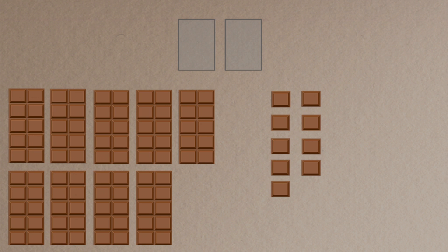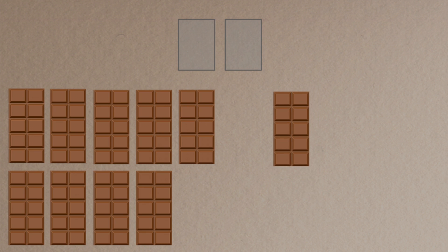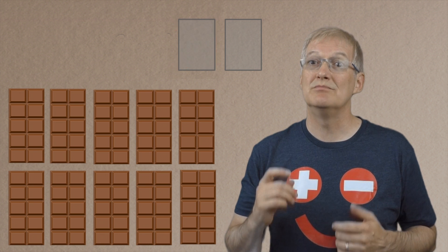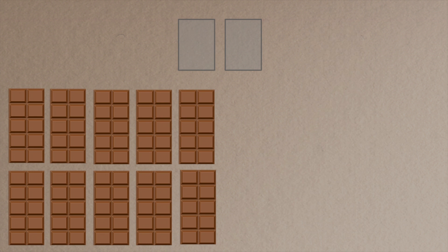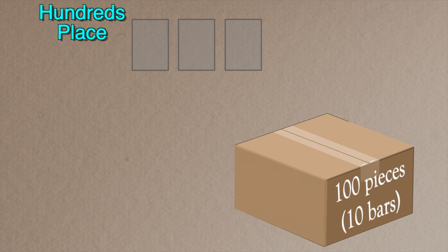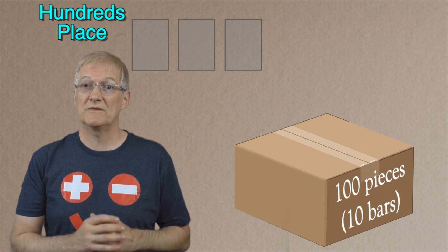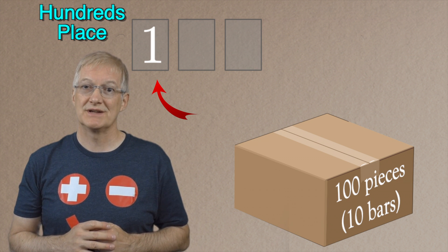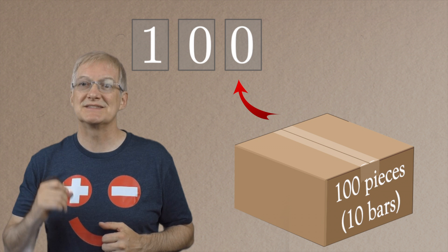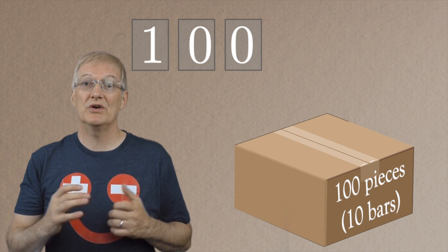But what happens if I want to add that extra piece to 99? I now have 10 separate pieces of chocolate which I can group together into a bar of chocolate — but that means I've got 10 bars of chocolate. I can't put a 10 in my tens place because number places can only hold one digit at a time. So I'm going to group those 10 bars of chocolate into a larger group — a box that can hold 100 pieces of chocolate. I add an extra number place to the left and, surprise surprise, I'm going to call this the hundreds place. I place a one in my hundreds place, a zero in my tens place, and a zero in my ones place — and we've got 100 pieces of chocolate.